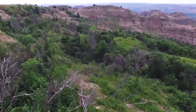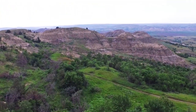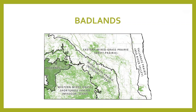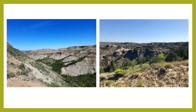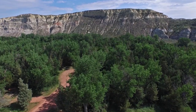Badlands habitat includes native prairie, woody draws, sagebrush flats, caves, rock crevices, and trees. The grasses, forbs, shrubs, and trees that grow in the badlands are adapted to grow in a dry climate and provide food and shelter for wildlife. Over 90% of the badlands remain in native vegetation.